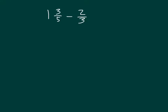Here I'm asked to solve 1 and 3 fifths minus 2 thirds. The units are not the same, so our first step is to get like units. I will look at each of these denominators — we've got 5 here and 3 here — and think about multiples. It goes 5, 10, 15 for that first fraction, and it's a mixed number. For the second one, we have 3, 6, 9, 12, and 15. That first common denominator for those multiples is 15.